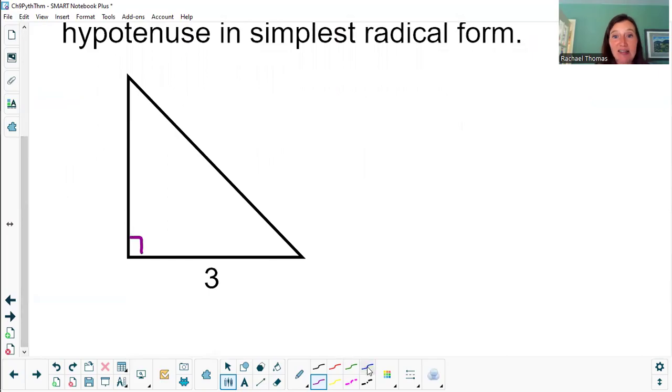And because it's isosceles, I can actually find the other leg pretty easily. Isosceles means two sides and two angles are congruent. Well, congruent means same length. If this bottom leg down here is 3, then this other leg also has to be 3.